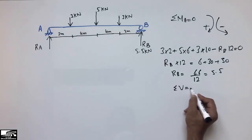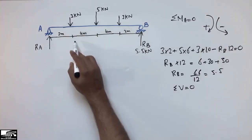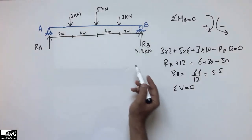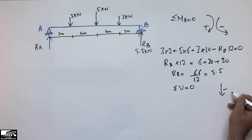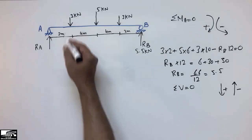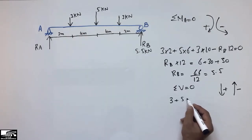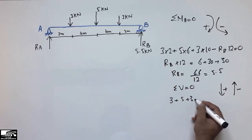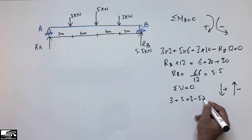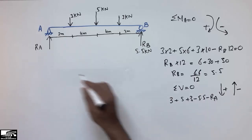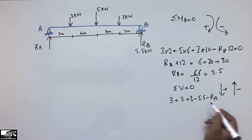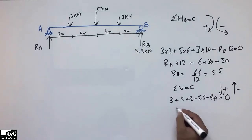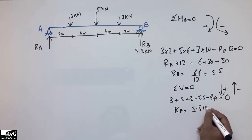Now I will take the summation of vertical forces equal to 0. Forces acting downward are taken as positive, and upward as negative. So 3, 5, and 3 are positive (downward), while RB (5.5) and RA are negative (upward). Solving gives RA equal to 5.5 kN.